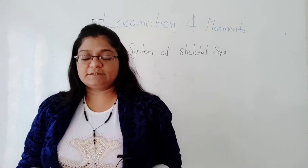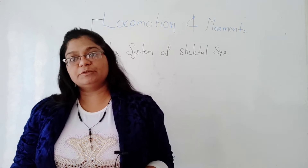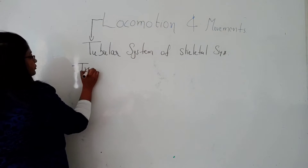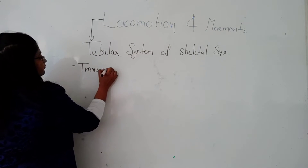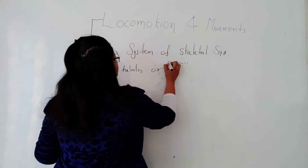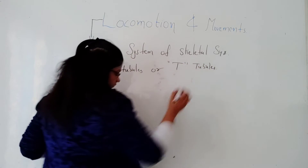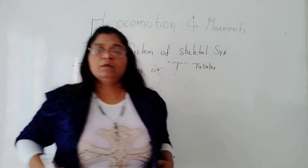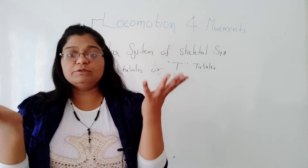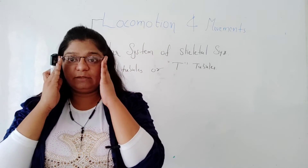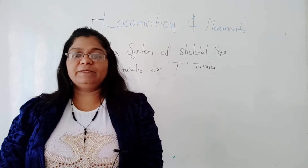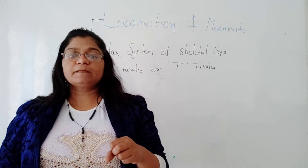The tubular system of the skeletal system consists of the transversal tubules, which we also call T-tubules. These transversal tubules form a huge network — many tubes together forming a network of myofibrils.